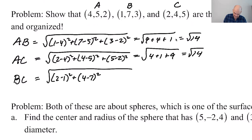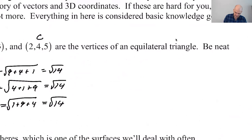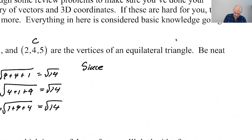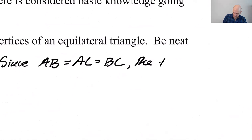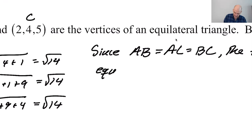BC better give us the same. You need that third side to really come through. This looks like it's going to work out—1 + 9 + 4 equals radical 14. We can make a statement: since AB = AC = BC, the triangle is equilateral.